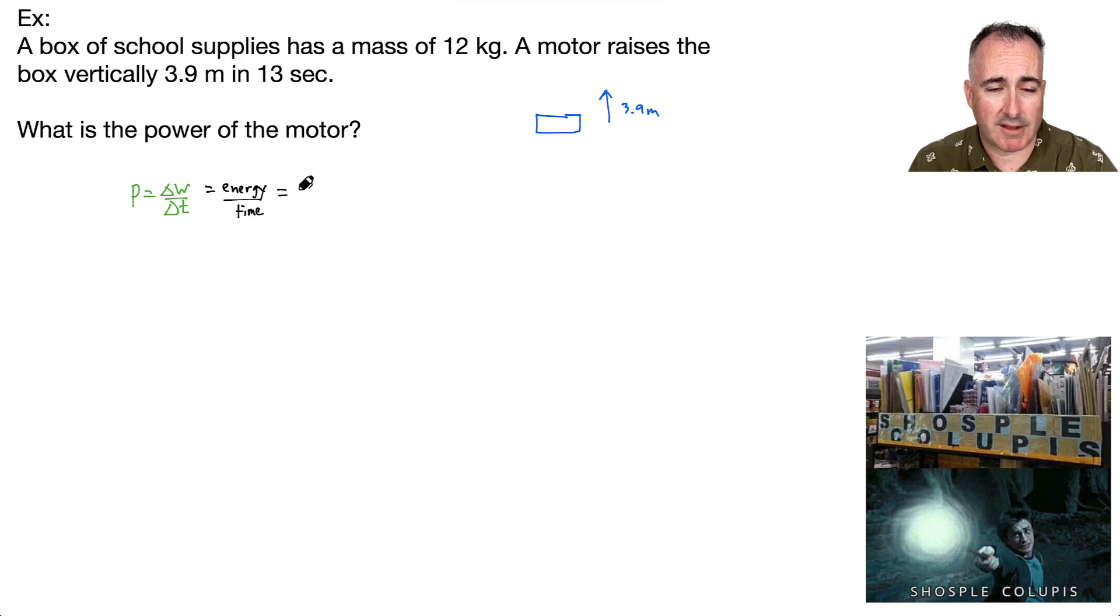Now what form of energy do we have here? In this case, we're going to be considering gravitational potential energy. We know that that equation equals M G delta H. That's this equation right here. And if that's the case, then we just keep going.